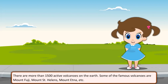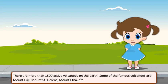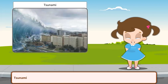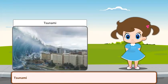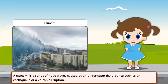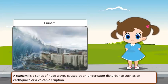Some of the famous volcanoes are Mount Fuji, Mount St. Helens, Mount Etna, etc. A tsunami is a series of huge waves caused by an underwater disturbance such as an earthquake or volcanic eruption.